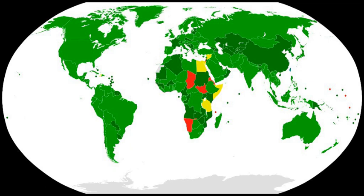Article 1: Never under any circumstances to acquire or retain biological weapons. Article 2: To destroy or divert to peaceful purposes biological weapons and associated resources prior to joining. Article 3: Not to transfer, or in any way assist, encourage or induce anyone else to acquire or retain biological weapons.